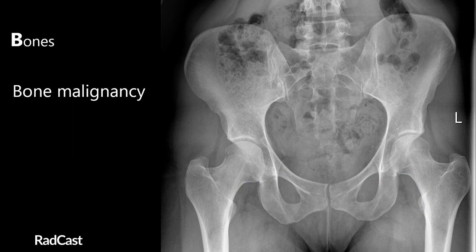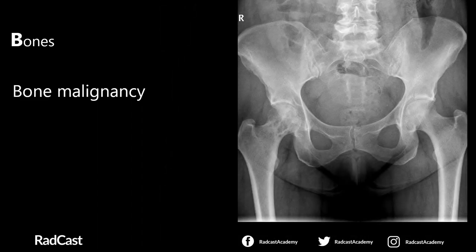Whilst assessing bony texture we need to look for lytic lesions — where the bone is being broken down — or sclerosis, which is areas of hardening of the bone. These are both signs of bone malignancy, which could be from an osteosarcoma, a primary bone cancer, or more commonly from bone metastases. Common cancers that metastasize to bone are prostate, kidney, lung and breast. This hip x-ray belongs to a patient who has breast cancer and there's evidence of bone metastases — take a moment to see if you can spot it, looking for any changes in bony texture comparing right to left.